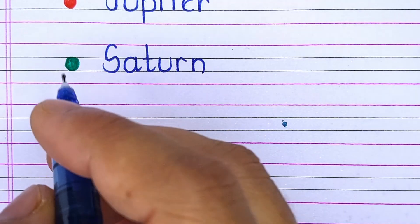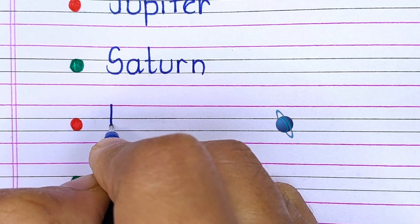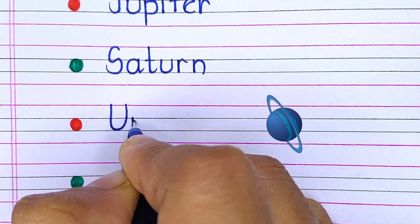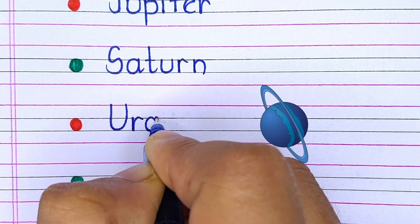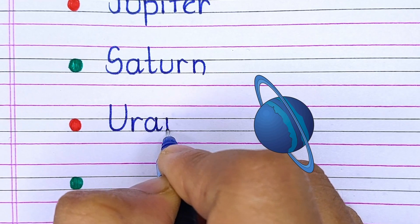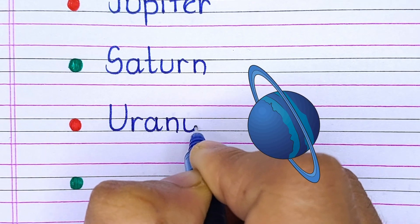The planet revolving after Saturn is U-R-A-N-U-S Uranus